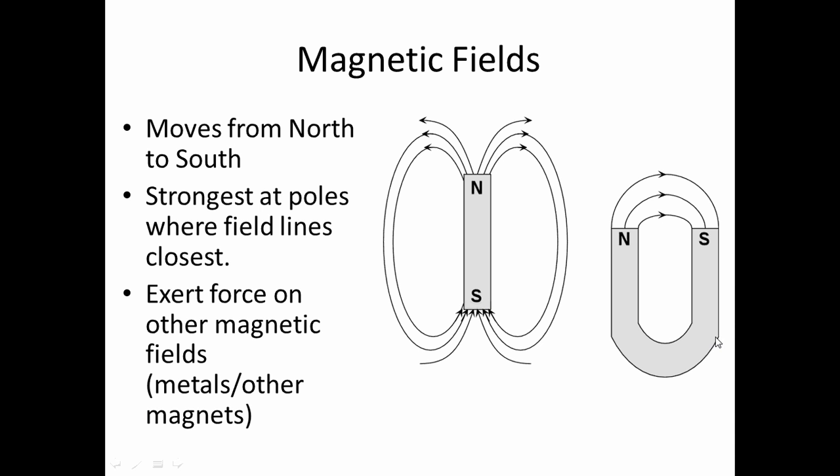In a horseshoe magnet, the same idea happens. This is just a bar magnet that's been bent into a U. It's still going to go from north to south.